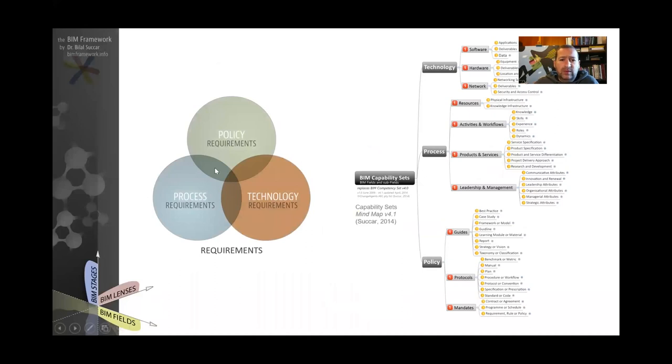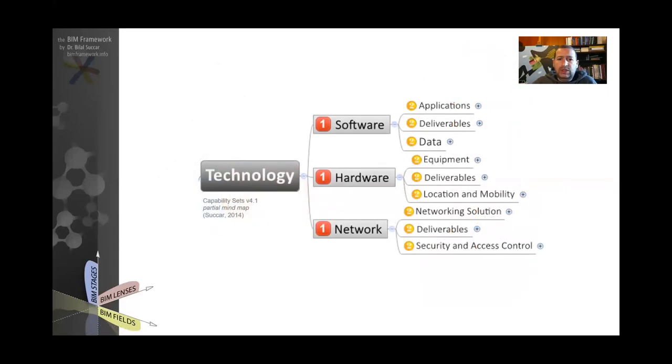If you remember from the Venn diagram from BIM fields, as we said, we've got policy, process, and technology. These are the types. And if you remember from a previous slide, we said there are deliverables, requirements, and players. So here we're focusing on requirements. If we look at technology, technology is also subdivided into smaller parts: software, hardware, and network. And these are steps.